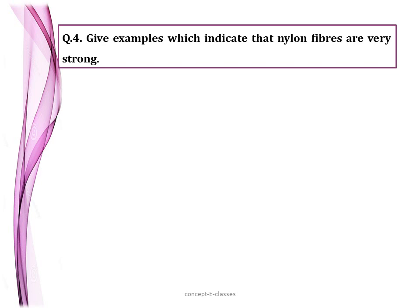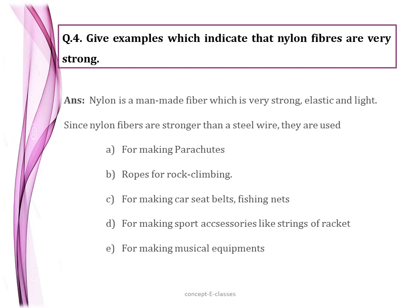Question four: give examples which indicate nylon fibers are very strong. Nylon fiber is a man-made fiber which is very strong, elastic, and light. Examples showing nylon is strong: it is used for making parachutes, ropes for rock climbing, car seat belts, fishing nets, sport accessories like strings of rackets (e.g., tennis rackets), and musical instrument strings such as guitar and violin strings.